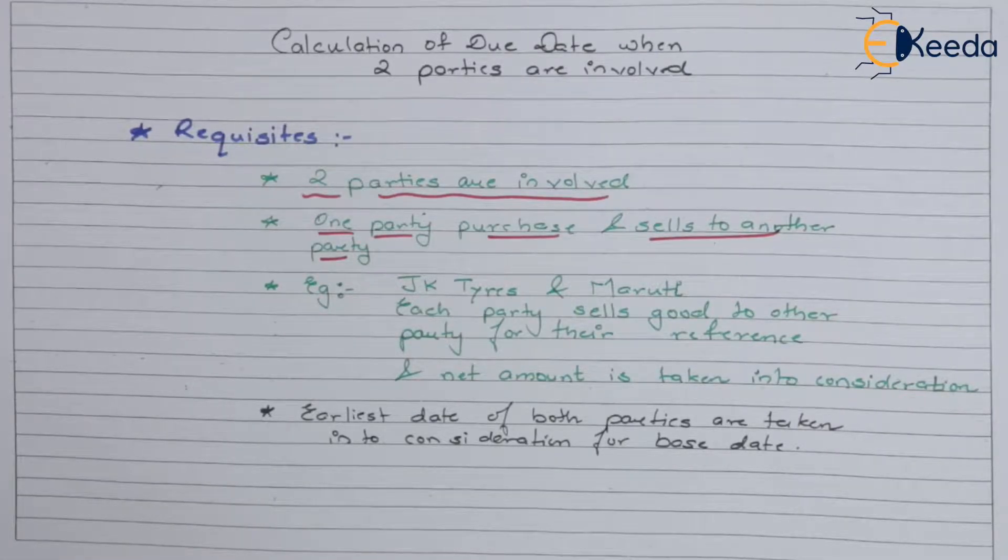around ten lakh rupees and the cost of ten tires is around two lakh rupees. So instead, I have to pay Maruti the net amount of eight lakh, which is to be paid by my employees. I'm taking my employees for the example only. This is between two companies